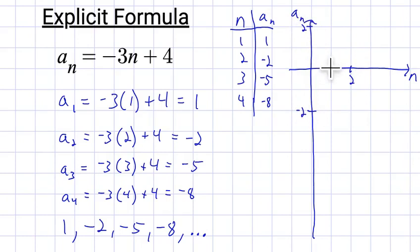So each line is worth 1, but I'm not going to label every single line. Alright. So the first point will be 1, 1. Second point is 2, negative 2. Third point is 3, negative 5. And the fourth point is 4, negative 8.